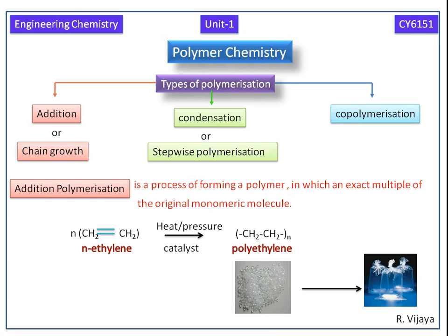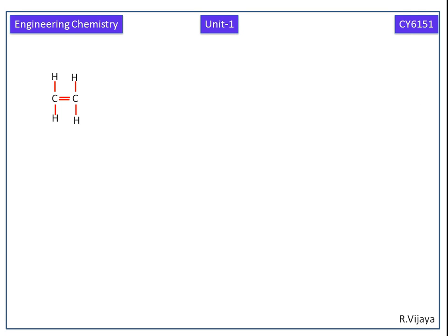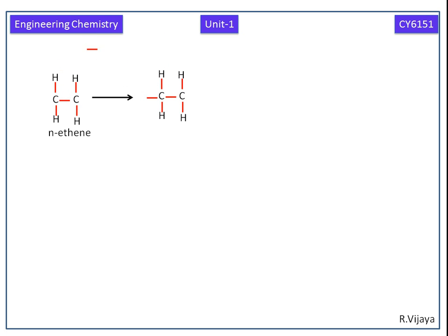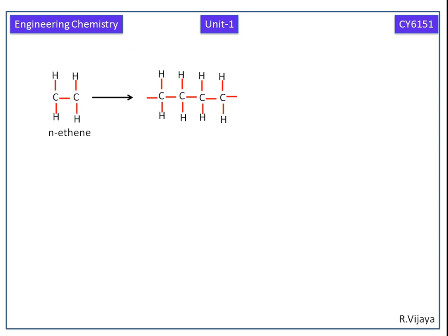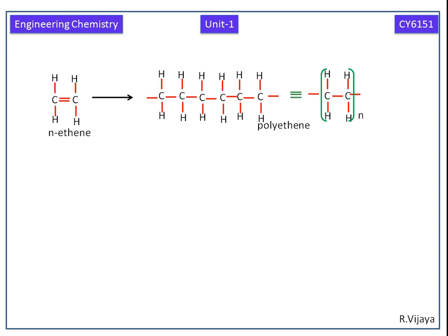Polyethylene bags are obtained from polyethylene. Now we can see how polyethylene is formed. The second molecule of ethylene attaches with the first molecule, and the third molecule attaches to the second molecule. The simplest way of writing polyethylene is –(CH₂–CH₂)–n times.